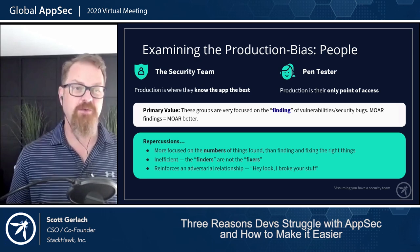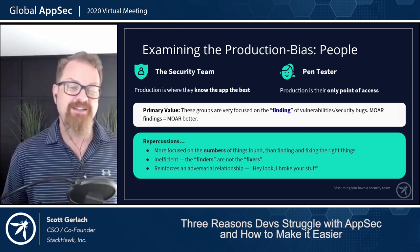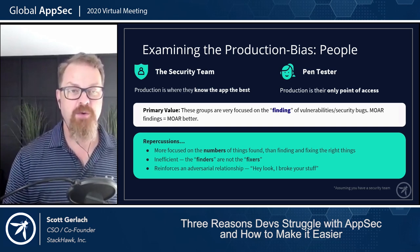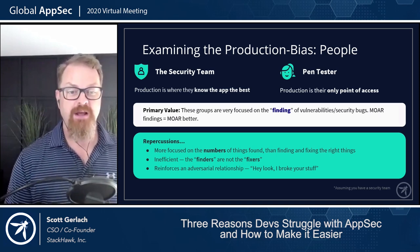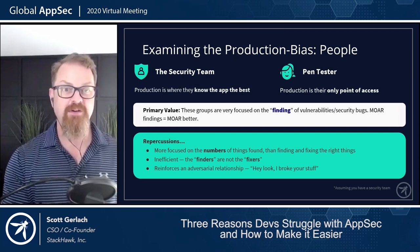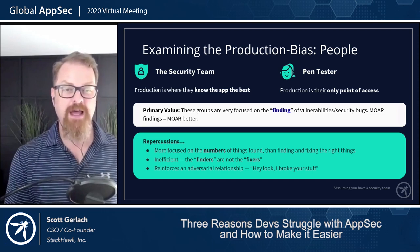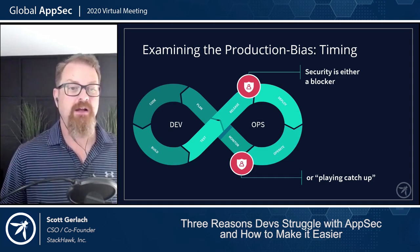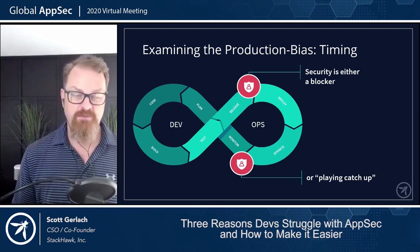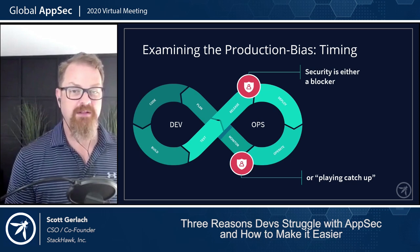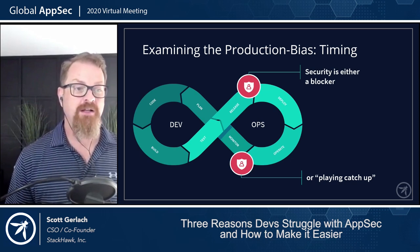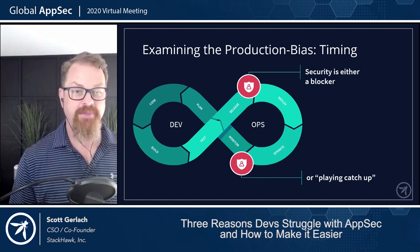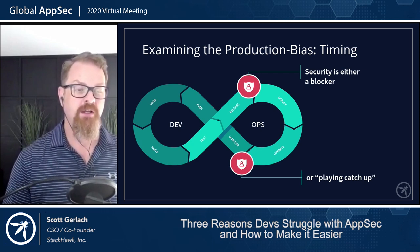The repercussions of this production bias for people is you're more focused on the number of things found than finding and fixing the right things. Pen testers' value is in how many things did you find; the security team's value in the tool they bought is in how many things did it find — not can I fix the right things? It's inefficient because neither of these two teams in most cases are the fixers of any of these problems. And then it reinforces that adversarial relationship: hey, look, I broke your cool thing. As a security professional, you should be proud of finding hard-to-find security problems, but that is not the value of the developer — they're thinking about delivering value to the customer.